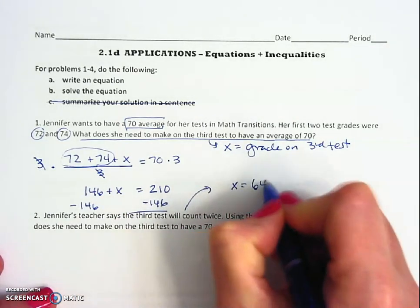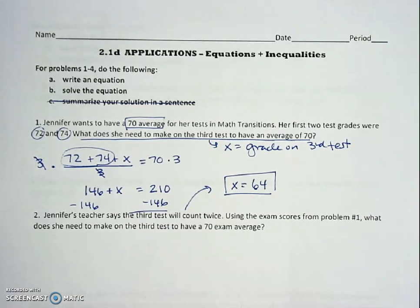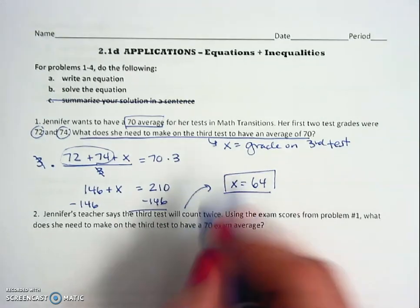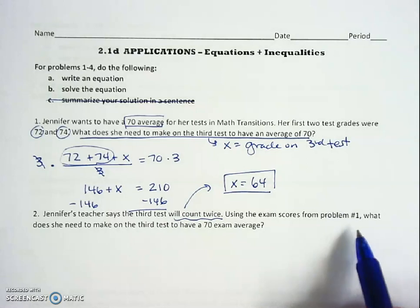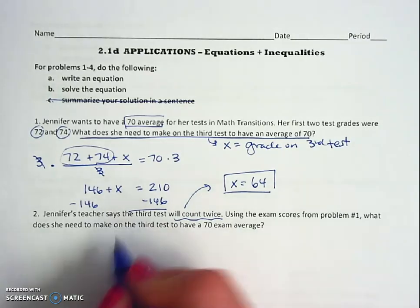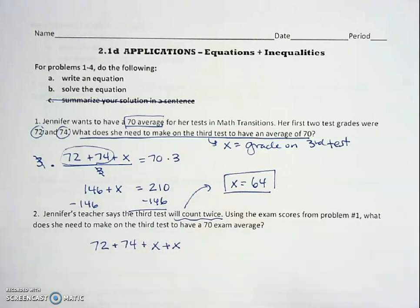Number two changes it a little bit. Now Jennifer's teacher says the third test will count twice. Using the exam scores from problem one, what does she need to make to get a 70 now? So the 72 and the 74 are the same, but now that third test counts two times. You can write it as x plus x or you can write it as 2x if you wanted to.